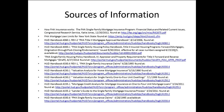Sources of information for FHA rules include the various handbooks — currently being consolidated into a new single handbook — as well as older handbooks and mortgagee letters. For older loans you'll want to reference the handbook and mortgagee letters that were in effect at that time. The outline provided has much more detail including citations for all topics covered.